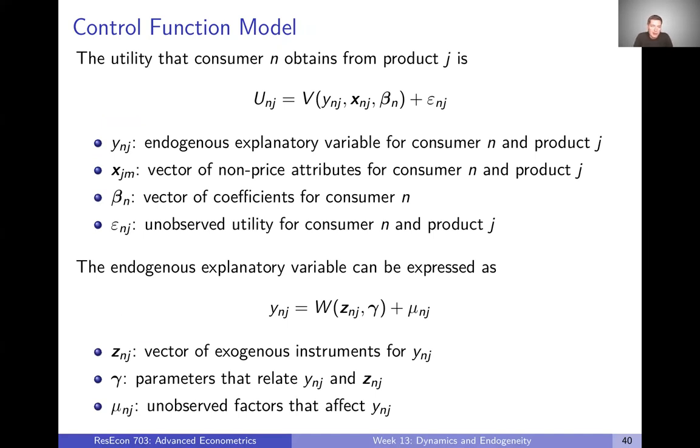The model we're going to start from is that the utility that consumer n obtains from product j is representative utility V plus some unobserved utility epsilon. Representative utility depends on some endogenous variable Y, some exogenous variables X, and individual specific coefficients beta. Let's also model our endogenous explanatory variable Y as some function of exogenous instruments Z and parameters gamma that relate Y and Z, plus an error term mu.